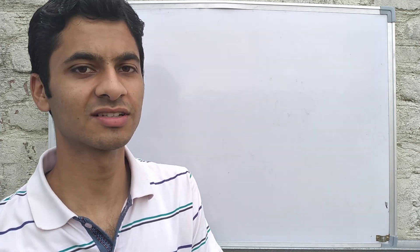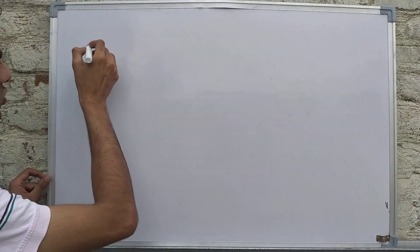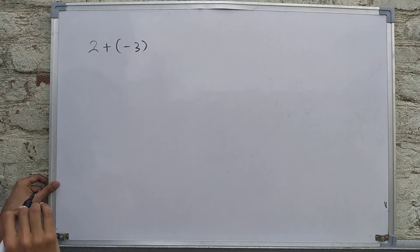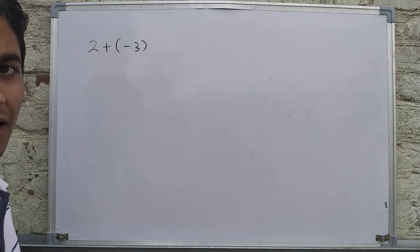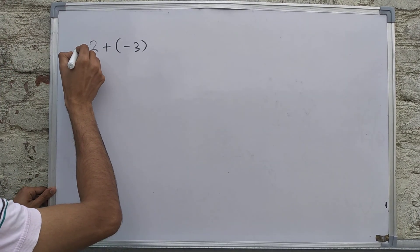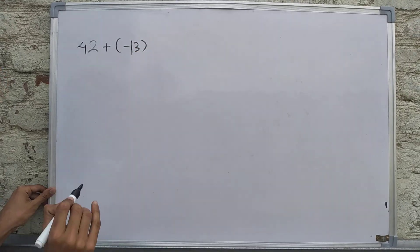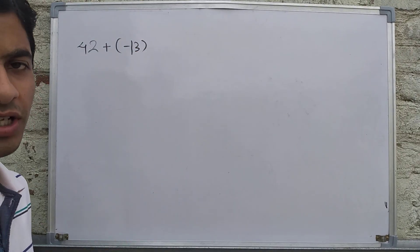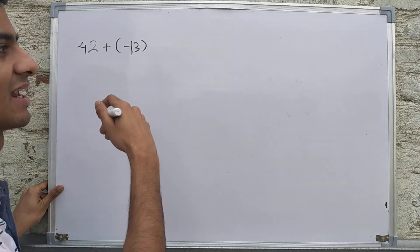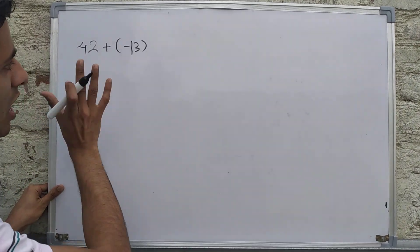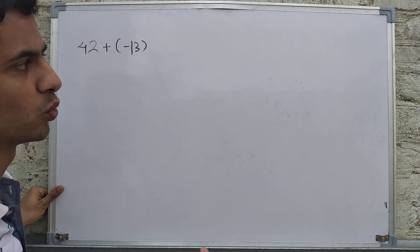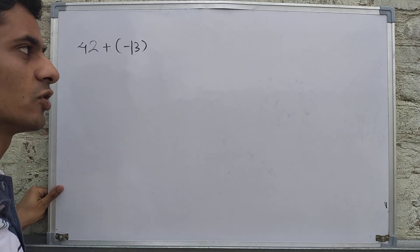Suppose you want to solve 2 + (-3). You can use the number line, but if the question is 42 - 13, we obviously cannot do it using a number line — we cannot draw a big number line and show shifting directions. So how do we solve such questions?